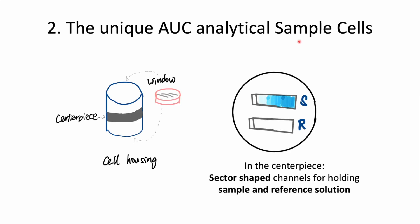Now let's zoom into the analytical sample cell. They are very special because they are not just tubes holding your sample — it's actually an assembly. If you look at the diagram on the left, you can see three main components that make up the analytical sample cell. First, we have the main body, which we call the cell housing. This is a very tough outer shell whose job is to hold everything together and to withstand the immense centrifugal force inside the centrifuge. And next, we have the windows — every cell has two of these windows, one at the top and one at the bottom, made of optically transparent material like quartz or sapphire. They are crucial because having these windows will allow light to pass through.